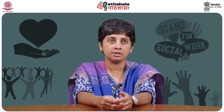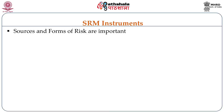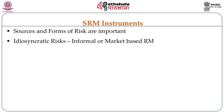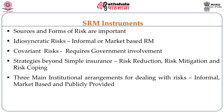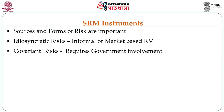Under the SRM framework, the sources and forms of risks are important. The framework talks about two different kinds of risks: idiosyncratic risks as against covariant risks. Idiosyncratic risks are essentially related to informal or market-based risks, whereas covariant risks require government involvement. Idiosyncratic risks are things that happen to individuals — basically one-off incidents — whereas covariant risks, such as an epidemic, affect a larger group like an entire community, neighborhood, city, or village.